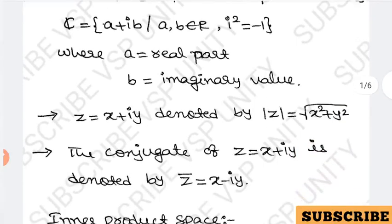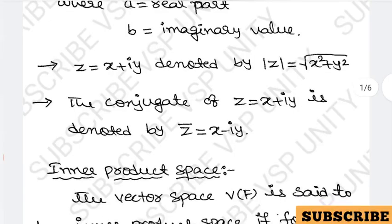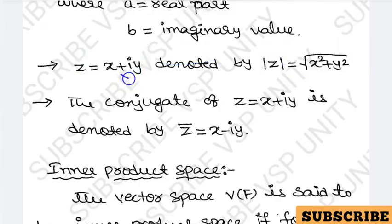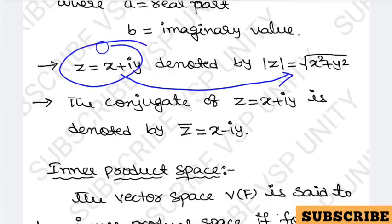Let us take any complex number z equal to x plus iy. The norm or magnitude of this complex number can be written as mod z equals the square root of x squared plus y squared. So the magnitude of a given complex number is root of x squared plus y squared.